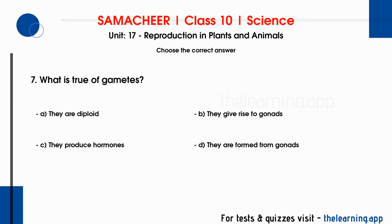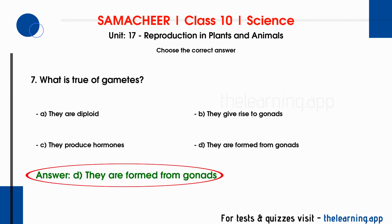Seventh question: what is true of gametes? Options are A. They are diploid, B. They give rise to gonads, C. They produce hormones, D. They are formed from gonads. The correct answer is option D, they are formed from gonads.